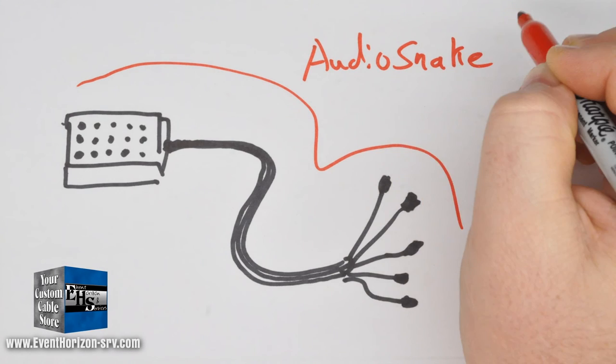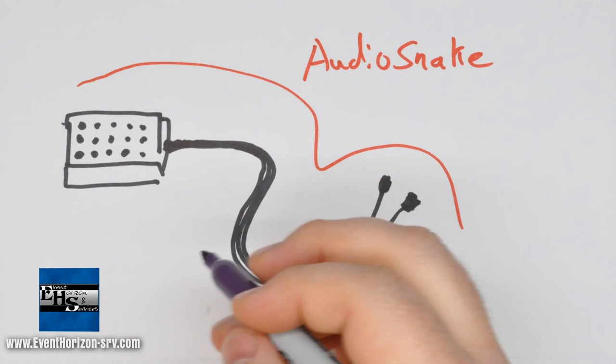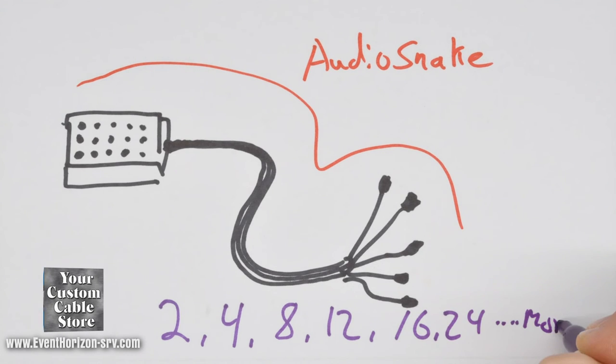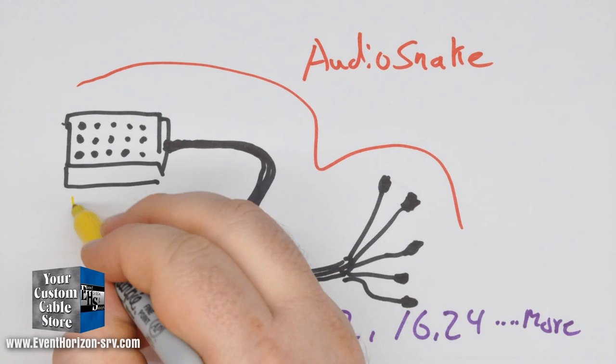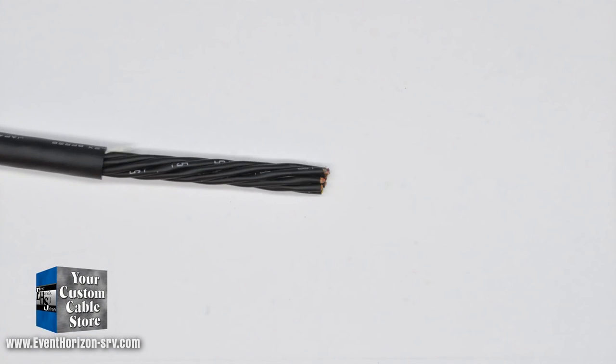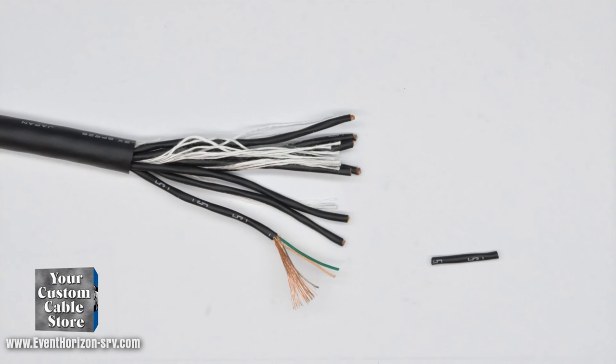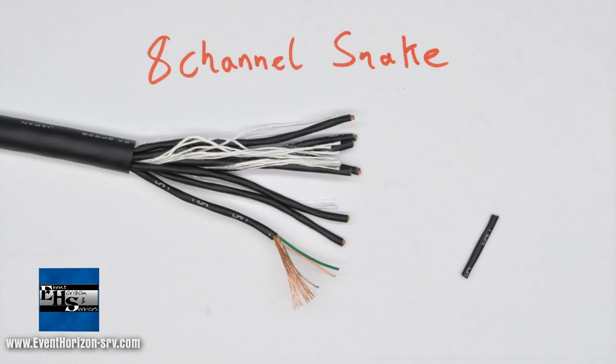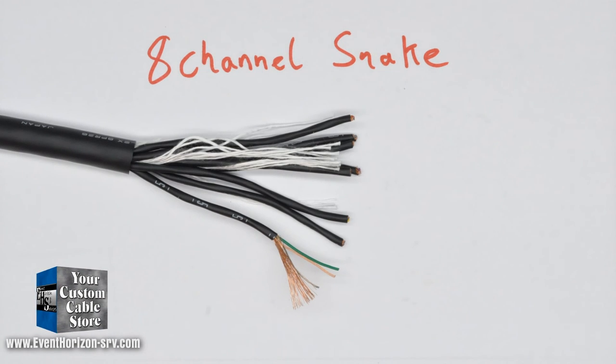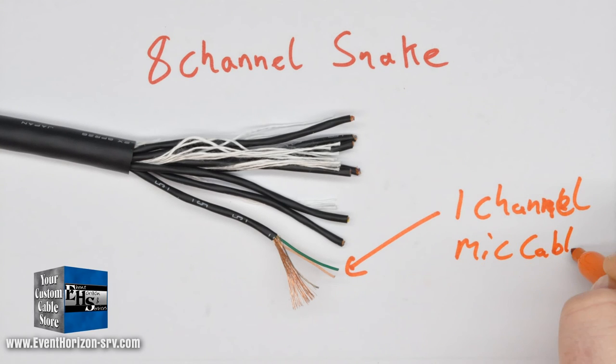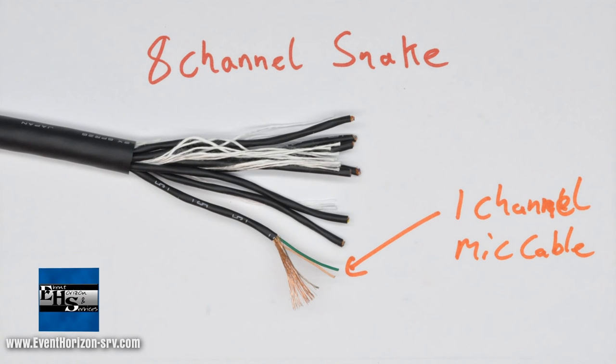The most common form of this is the audio snake, where it can have 2, 4, 8, 12, 16, 24, and more number of channels. In that audio snake, there are multiple mic cables or single pair shielded cables. Each cable is independent and can carry its own signal. Think of a 12 channel snake as taking 12 mic cables and taping them together to make one cable.